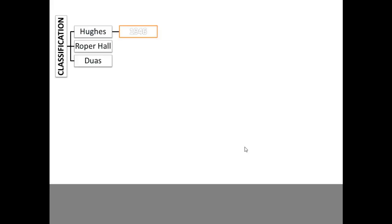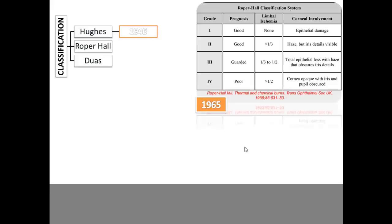The classifications used are Hughes classification, Roper Hall's classification, and Dua's classification. Hughes is quite old. Roper Hall's classification came in 1965 and was well accepted, mainly characterizing two points: limbal ischemia and the amount of corneal epithelial involvement.